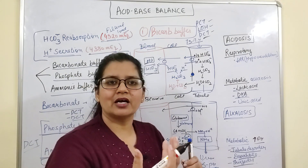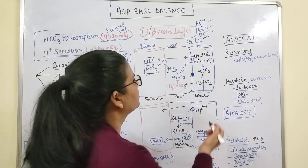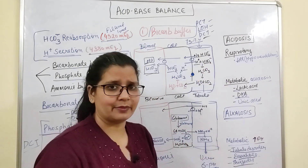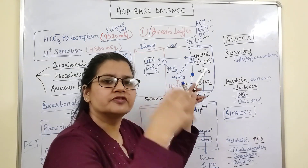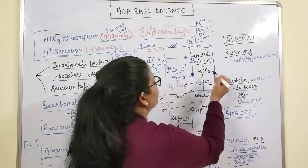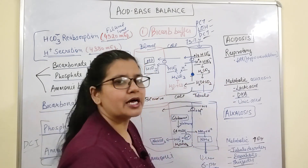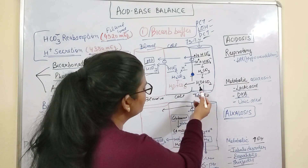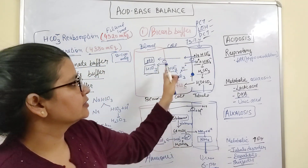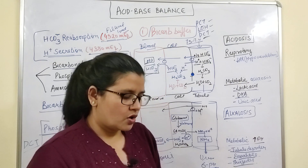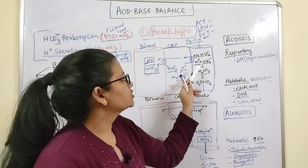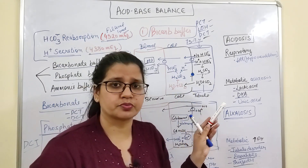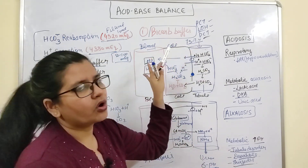Sodium bicarbonate enters the tubule and combines with the secreted H+, forming carbonic acid again. This carbonic acid is then converted into water and CO2. The CO2 can re-enter the cell and recycle the process, while water is excreted. This is how H+ is helping in bicarbonate reabsorption — most of the secreted H+ is used in this way.